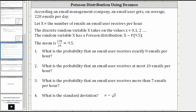According to an email management company, an email user gets on average 228 emails per day. Let the random variable x equal the number of emails an email user receives per hour. The discrete random variable x takes on the values zero, one, two, three, and so on, which represents the number of emails received per hour. The random variable x has a Poisson distribution.